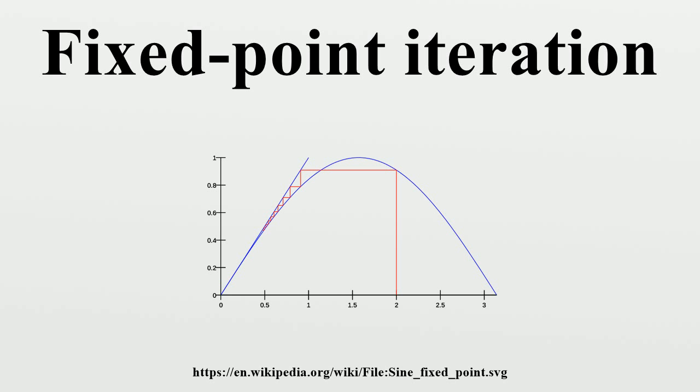If a function defined on the real line with real values is Lipschitz continuous with Lipschitz constant L less than 1, then this function has precisely one fixed point, and the fixed-point iteration converges towards that fixed point for any initial guess. This theorem can be generalized to any metric space.